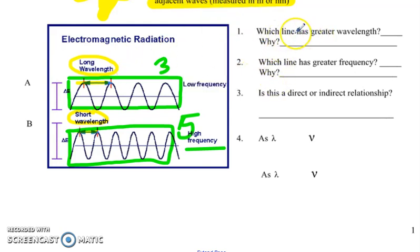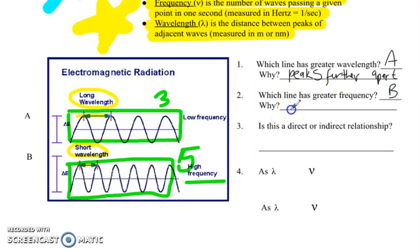So let's analyze this chart. Which line has a greater wavelength, A or B? A. Why? Perfect. The peaks are further apart. You also could look at the troughs, the low parts, or any corresponding points. Which line has greater frequency? B. Why? Since they're closer together, there are more wave cycles. More waves per unit time. Per second, per minute, per nanosecond, whatever you want to talk about.